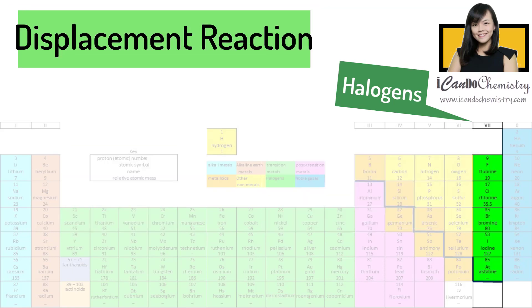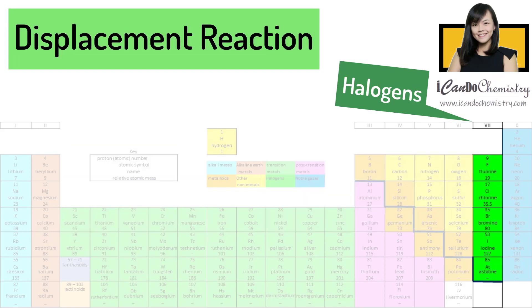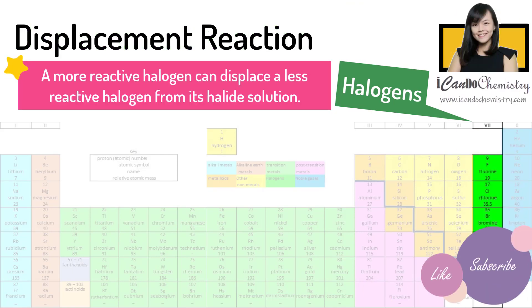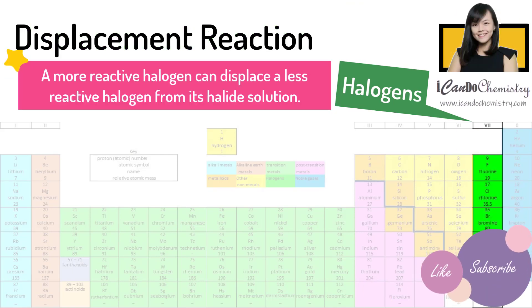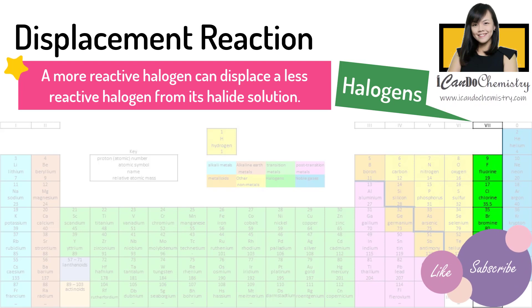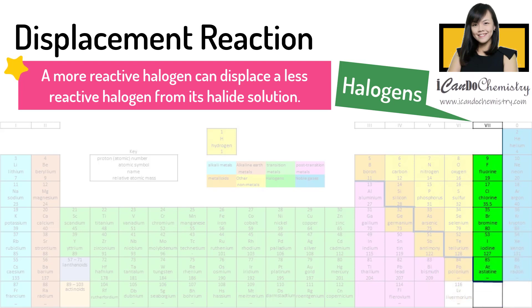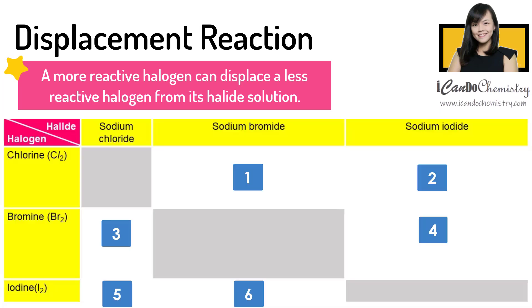Halogens undergo displacement reactions with halide solutions. This is an important statement to remember: a more reactive halogen can displace a less reactive halogen from its halide solution.